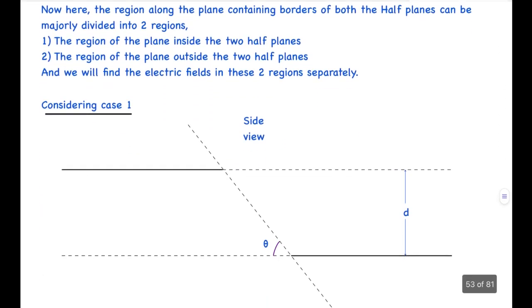The region along the plane containing the borders of both half-planes can be majorly divided into two regions: the region of the plane inside the two half-planes, and the region of the plane outside the two half-planes. We'll find the electric field in these two regions separately. Now first let's consider case one.